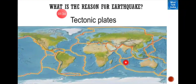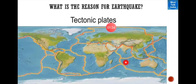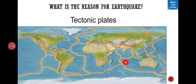Now we will read what is the reason for an earthquake — the tectonic plates. Dear students, deep under the surface of our earth, the earth is divided into many plates. We cannot see them from outside. These are called tectonic plates. When these plates move or collide, the earth also moves and then the earthquake comes.